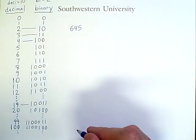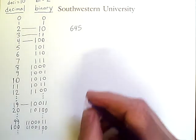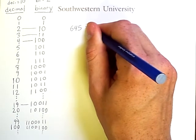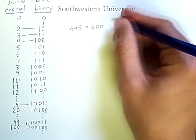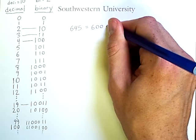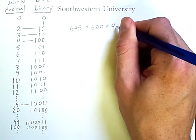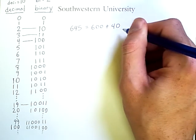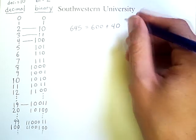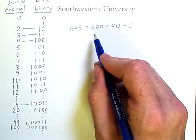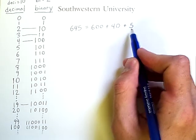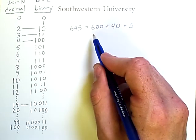Now, what does 645 mean? It means that we have 6 hundreds added to 40, which is 4 tens, added to 5. These are the digits in the 1s, tens, and hundreds columns, respectively.